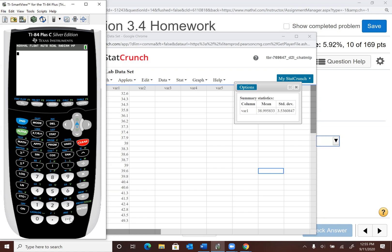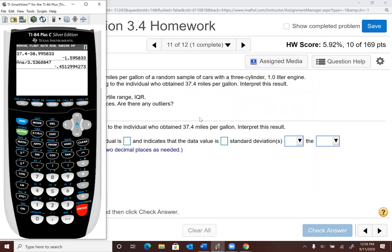So I have that. I'm going to divide by the standard deviation. So 37.4 minus 38.995833. I'm going to divide by the standard deviation, which was 3.5360847. Okay, so there's my standard deviation. Let me go ahead and enter that. It does say round to two decimal places as needed. So negative 0.45.